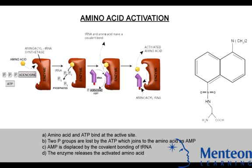Here the amino acid and the ATP bind at the active site. Two phosphate groups are lost by the ATP, which joins to the amino acid as AMP. Adenosine monophosphate is then displaced by the covalent bonding of tRNA, and the enzyme releases the activated amino acid.